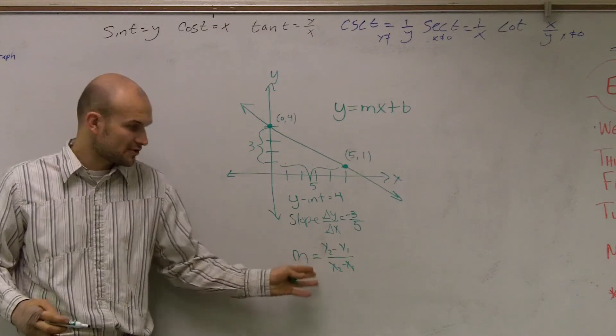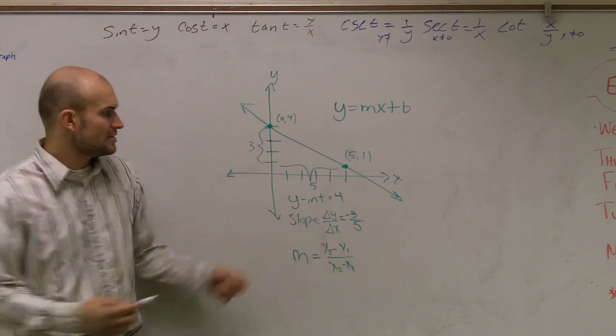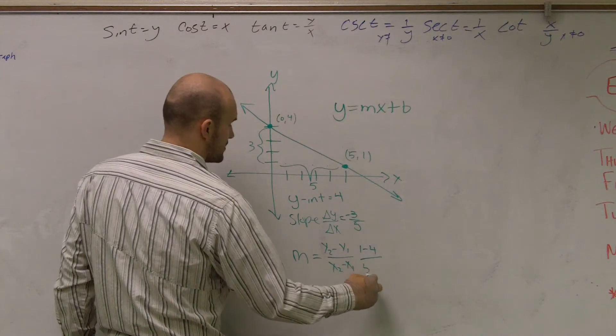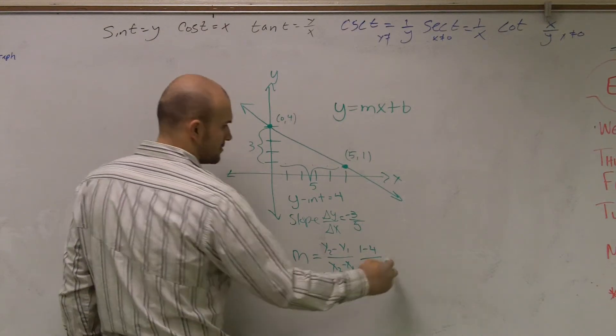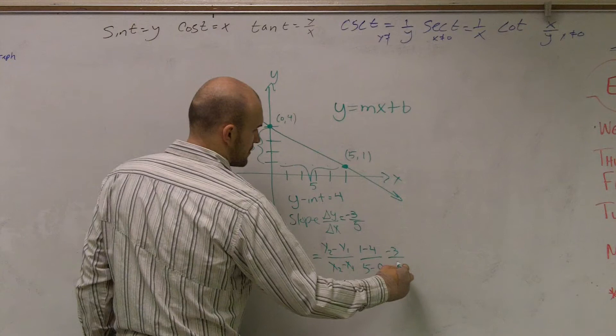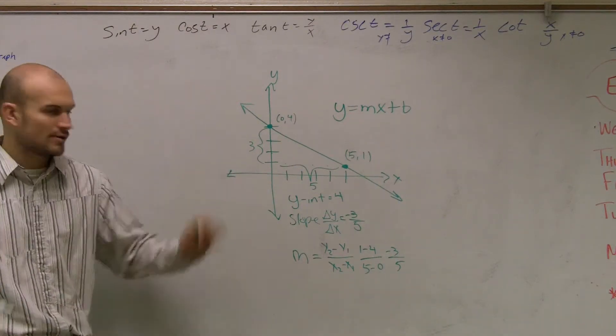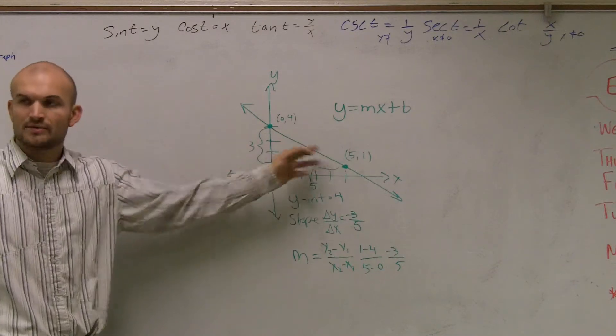You guys also could plug in the values for your slope and do that. So it would be 1 minus 4 all over 5 minus 0, right? Same way you could do it. Either way you want to do it. Usually just picking them is faster.